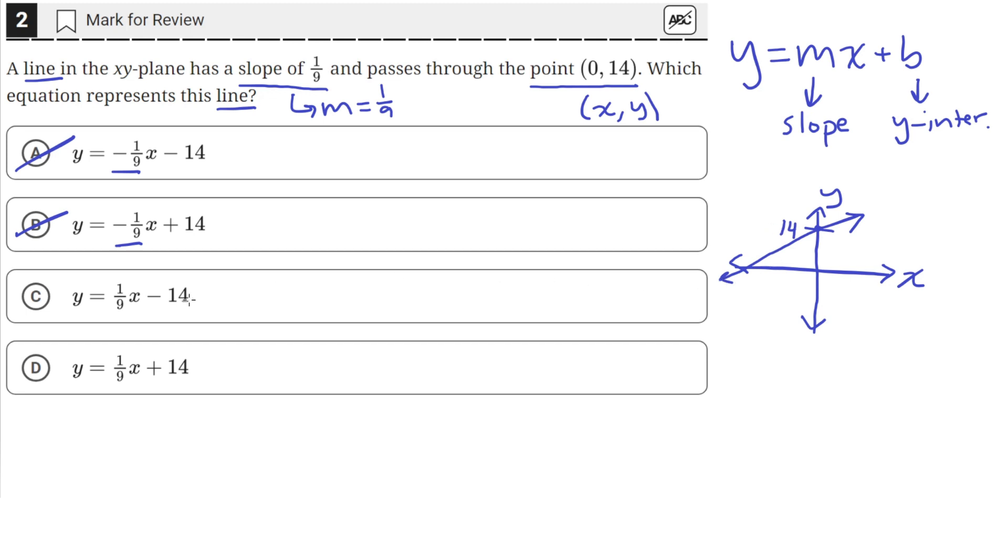The only answer choice that has a positive 14 as the y-intercept and a slope of 1/9 is answer choice D. So answer choice D is correct.